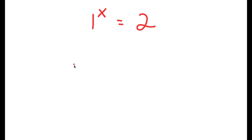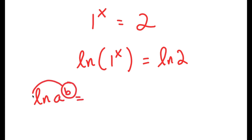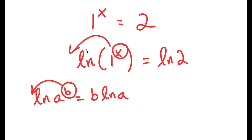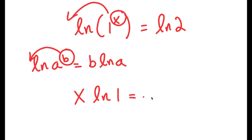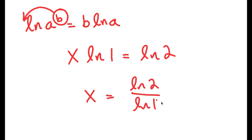What I'm first going to do is take ln of both sides. So I get ln of 1 to the power of x is equal to ln of 2. ln is the natural log. Using the property that ln of a to the power of b equals b times ln a, I can move x to the front: x times ln 1 is equal to ln 2. You might think we could divide both sides by ln 1, getting x equals ln 2 over ln 1. However, ln 1 is equal to 0, and anything divided by 0 is undefined.